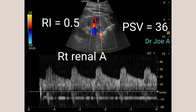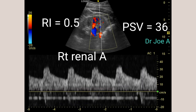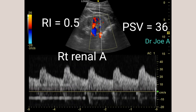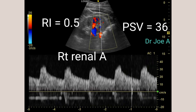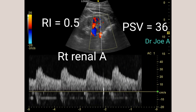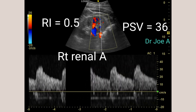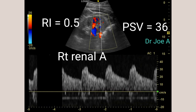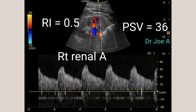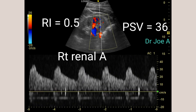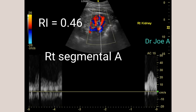Both renal arteries measured 0.7 cm in diameter, which is normal. The waveform of the renal arteries on spectral Doppler also appears normal.